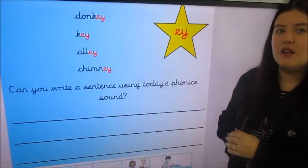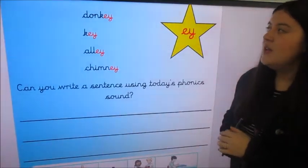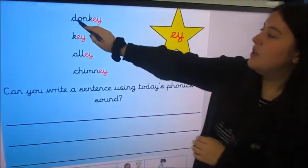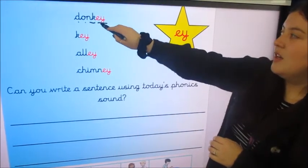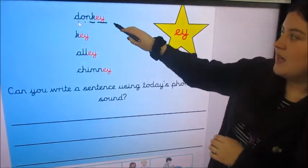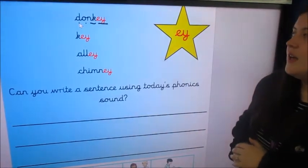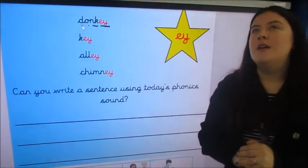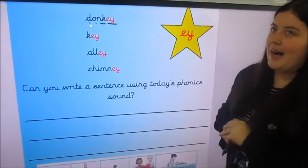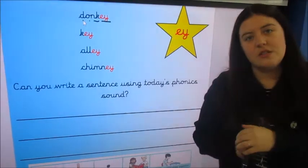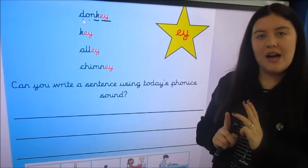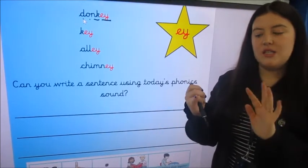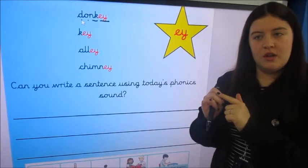So I'm going to use the word d-o-n-k-e-y, donkey, the spelling and the sound of the day. Okay, so my sentence. Now I'm going to start with I, and my sentence is going to be I went on a donkey at the beach. Full stop.